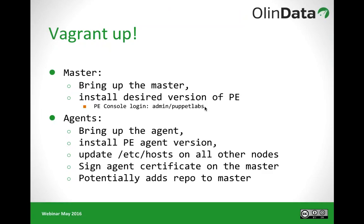When you say 'vagrant up' for one of the agents, it'll bring up the virtual machine and install the PE agent version for that operating system. It'll update /etc/hosts not only on that node but also on all the other nodes, so that DNS resolution works locally for all nodes. It'll create an agent certificate and sign it on the master. And if it needs to add a package repository to the master for the agent to retrieve the correct package version, it'll do that as well.